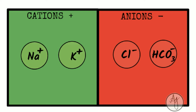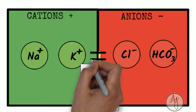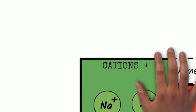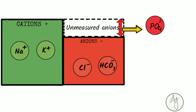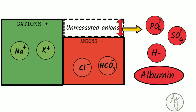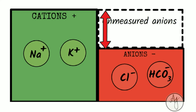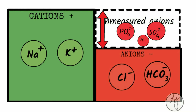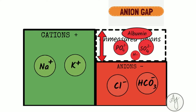The major measured cations are sodium and potassium, whereas the anions measured in this equation are chloride and bicarbonate. If the serum is actually neutral, the anion gap should be zero following the law of electroneutrality. However, it isn't zero because we're ignoring unmeasured anions like phosphate, sulfate, the anion component of organic acids, and negatively charged plasma proteins like albumin. The anion gap represents these unmeasured anions not included in the equation.